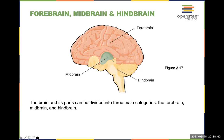Beyond lobes, we can look at the brain from an even broader perspective. The hindbrain begins at the top of the spinal cord and includes structures such as the cerebellum and the pons.